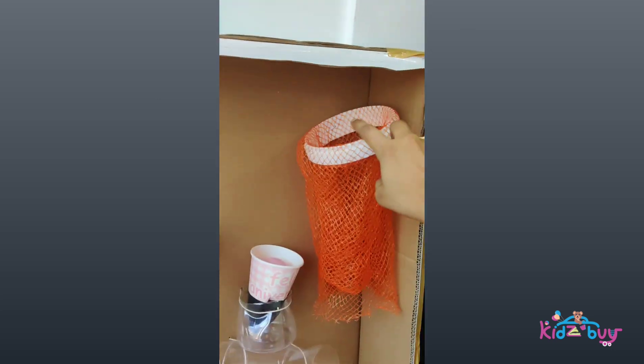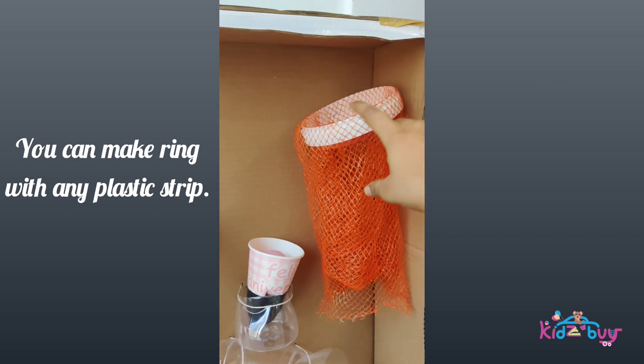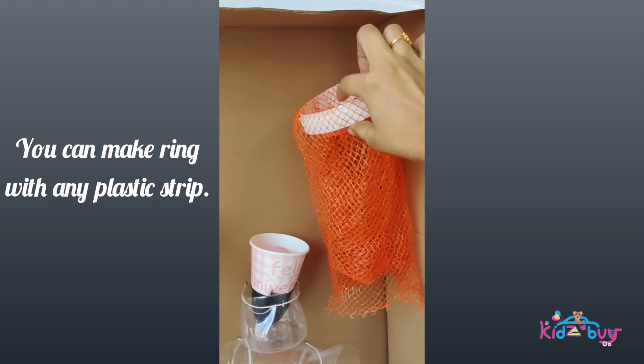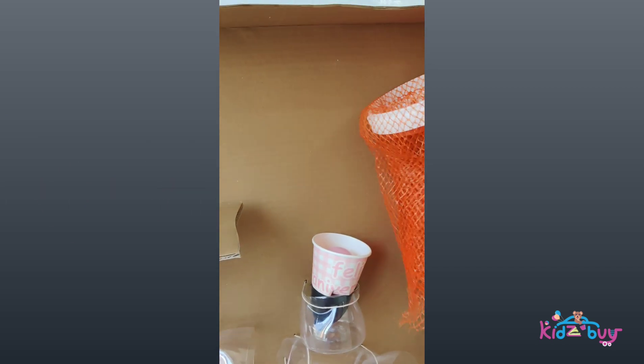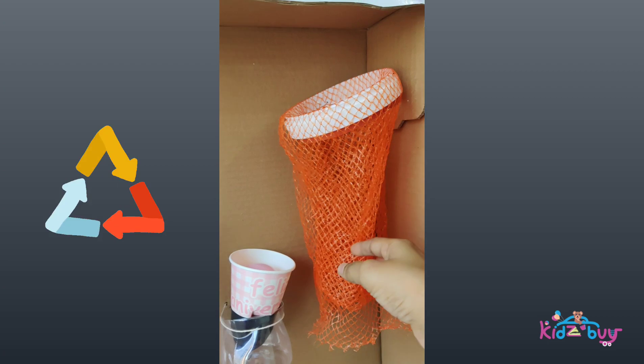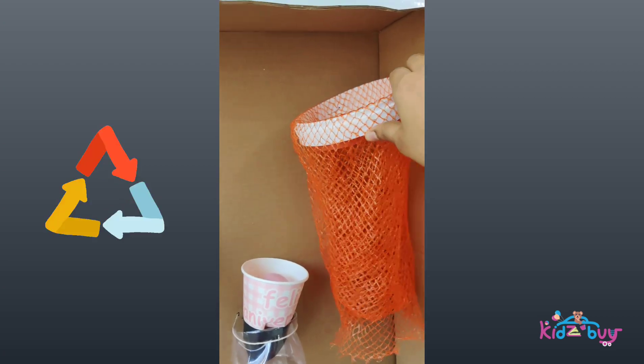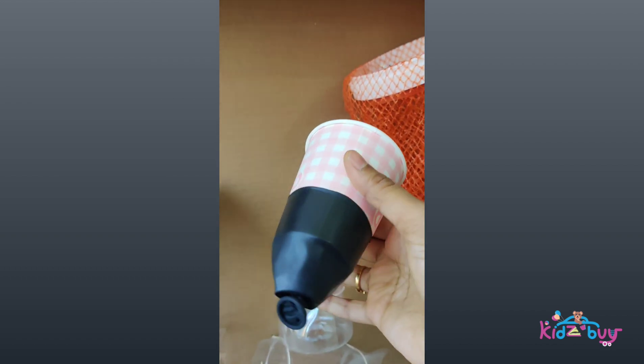Basketball shooter. For the ring I have used the bucket that you get along with the dosa batter. I've cut the top portion to make the basketball ring, and this is the net that you get with onions. If you don't have this, you can use a plastic cover or any cloth as well.